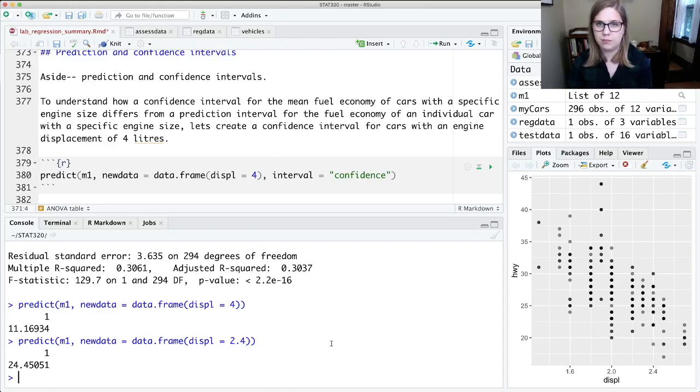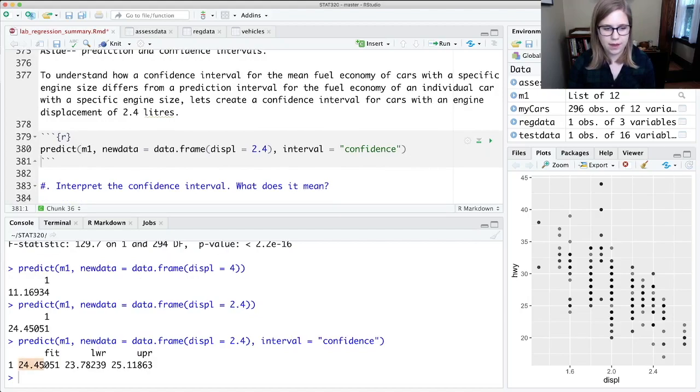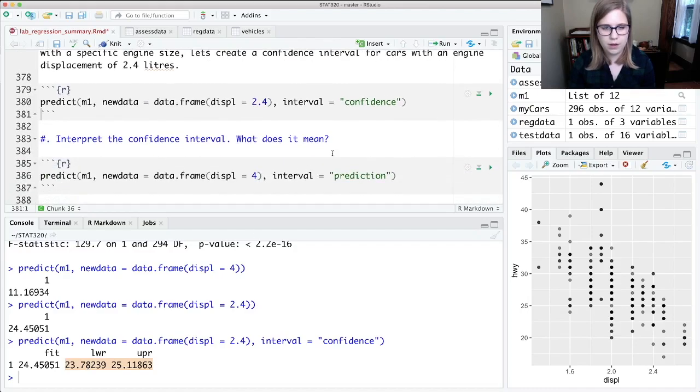But then we could do a prediction for a car with 2.4 liter engine. I'm just going to put that in here and we'll make it a confidence interval. So I run this, I get that fitted value, but then I also get a lower and an upper.